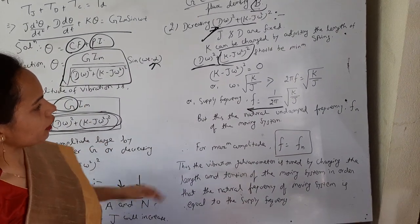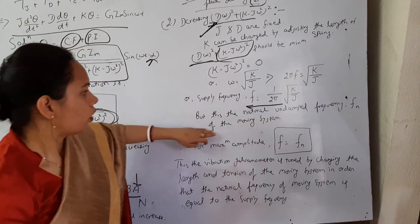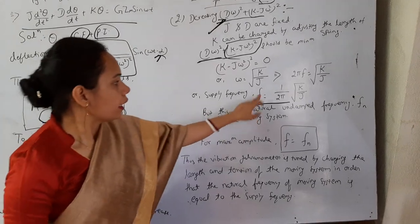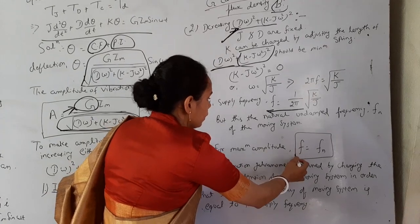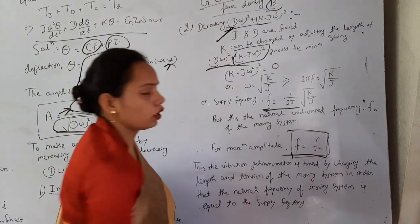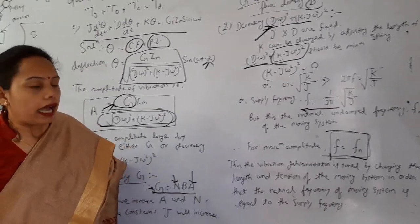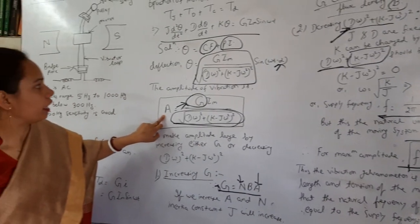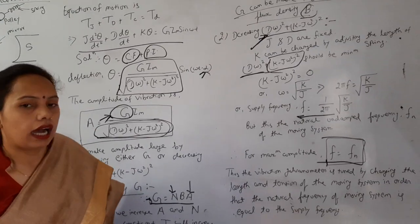But as we already know that for natural undamped frequency has a value equal to 1/(2π)√(K/J). So the condition has arrived that natural frequency should equal to supply frequency. So the amplitude of the vibration should be maximum. Thus how it can achieve?